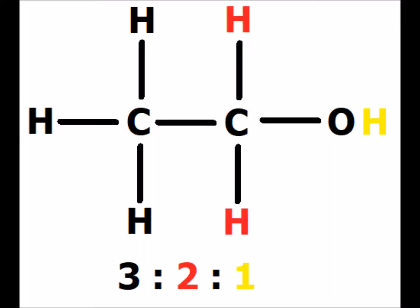In ethanol, recall that we have three different types of hydrogens, and their ratios are in three to two to one, as in black to red to yellow. The three black methyl hydrogens have the two red hydrogens as their neighbors. Therefore, the signal for the black hydrogens will be split into three because we get N+1 peaks, where N is the number of neighbors — two neighbors leading to a triplet.